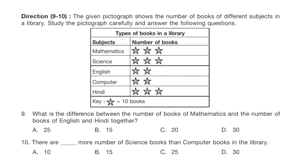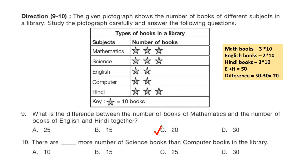Questions 9 and 10: The given pictograph shows the number of books of different subjects in a library. Study the pictograph carefully and answer the following questions. The key is given: one star equals 10 books. Question 9: What is the difference between the number of books of mathematics and the number of books of English and Hindi together? The correct answer is option C. Solution is shown here.